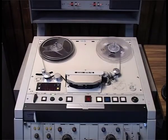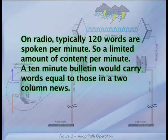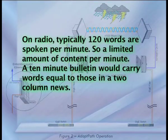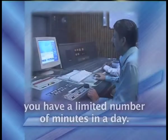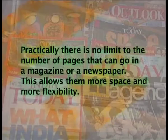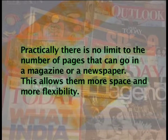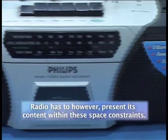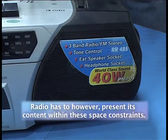The radio cannot accommodate a huge amount of content — in fact, it has very limited space. Radio exists in time and is a transient medium, so its ability to hold or convey content is quite limited. On radio, typically 120 words are spoken per minute, so a 10-minute bulletin would carry words equal to those in two columns of news. The news or any other content would have to be presented in brief. On the other hand, there is practically no limit to the number of pages that can go in a magazine or a newspaper, allowing them more space and flexibility. Radio has to present its content within these space constraints, which could be seen as a disadvantage.